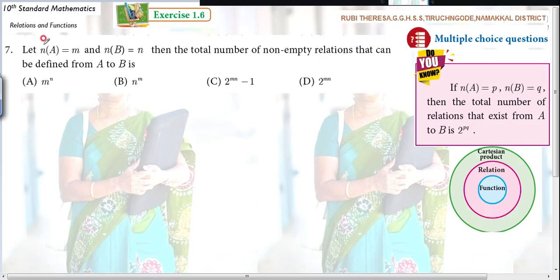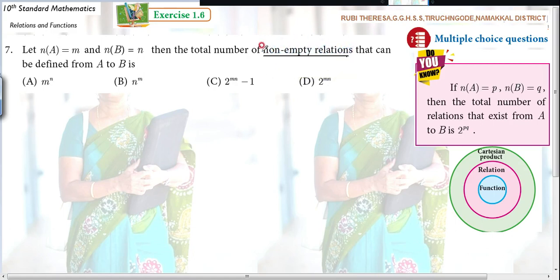Now listen here. Let N of A equal to M and N of B equal to N. Then the total number of non-empty relations that can be defined from A to B is blank. Here you have to see the condition — they have not asked the total number of relations, they have asked the total number of non-empty relations. That means without the empty set, how many relations are there?